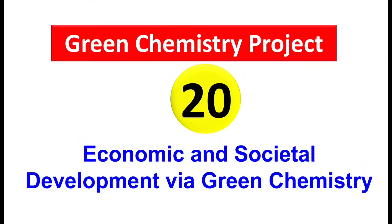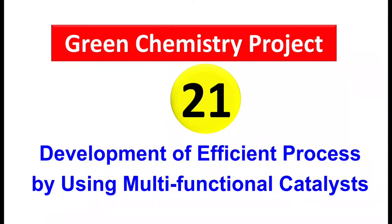Next, economical and social development via green chemistry. Development of efficient processes by using multifunctional catalysts. A catalyst is a substance which increases the rate of a reaction. In many industries, the scientific community is trying to develop a variety of catalysts which can play a multifunctional role — some can be used for hydrogenation, dehydrogenation, oxidation, and so on — so one catalyst can be designed for a variety of chemical transformations. This is called a multifunctional catalyst.